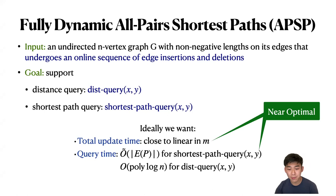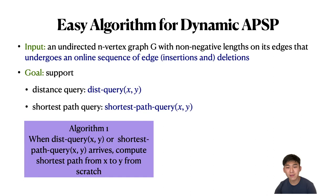Notice that these total update time and query time requirements for shortest path queries are both near optimal. In addition, we require that our algorithm supports distance queries in time poly-log n.